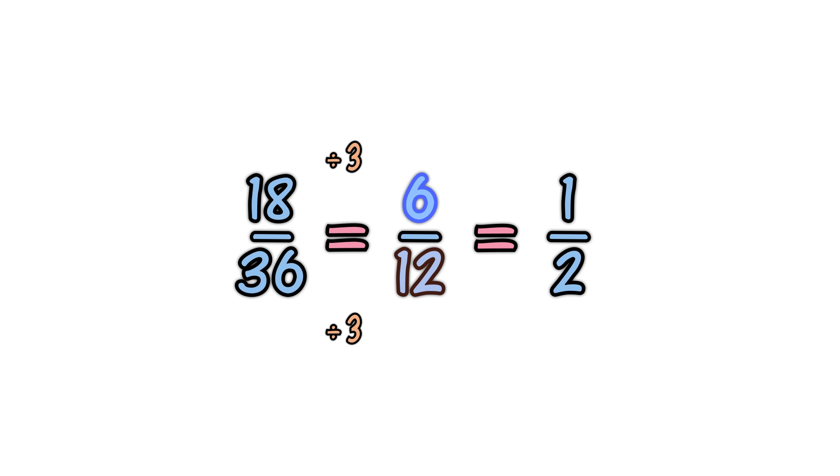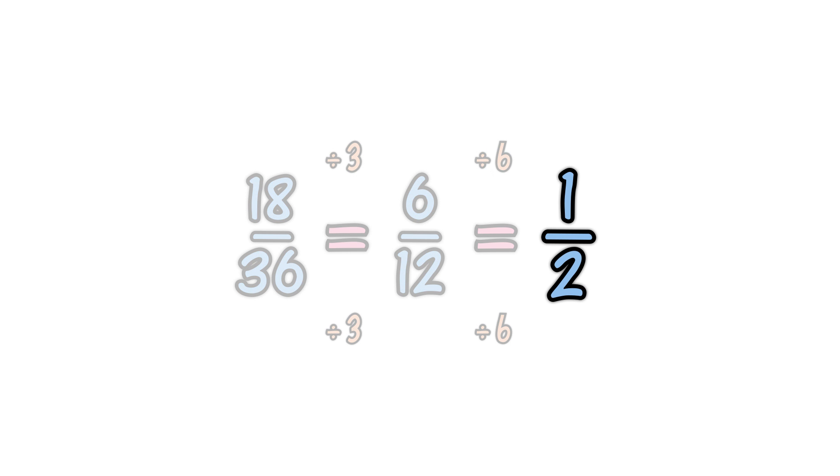When we divide the six and the twelve by six, we get a one and a two. So six over twelve is equivalent to one over two. Choose the number you divide by carefully, so that the results, both top and bottom, stay whole numbers. If we keep dividing until we can't go any further, then we have simplified the fraction, made it as simple as possible.